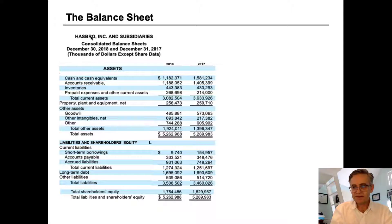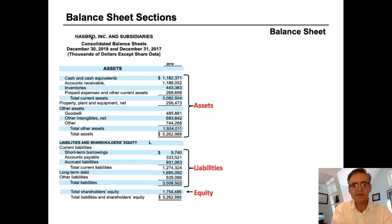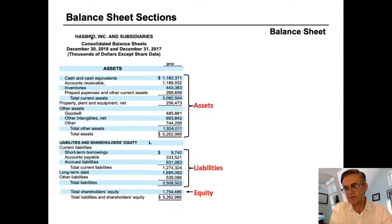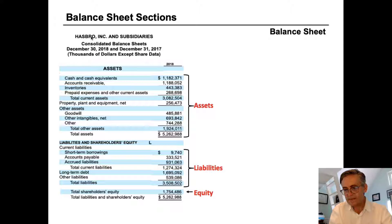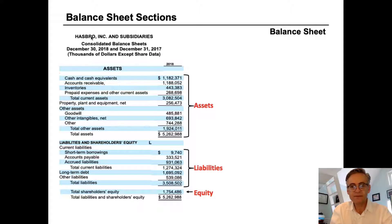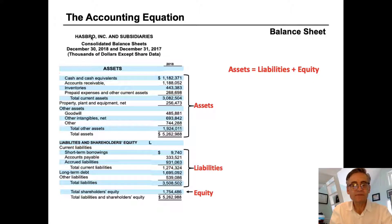All balance sheets have three basic sections and a defining calculation. The sections are assets, liabilities, and equity. In this way, all balance sheets are an expression of the accounting equation. The accounting equation is: assets equals liabilities plus equity.